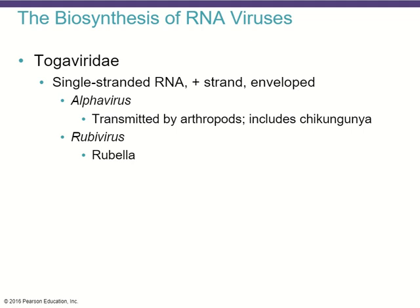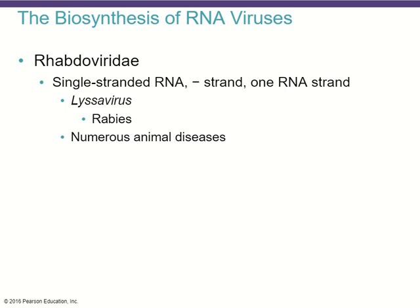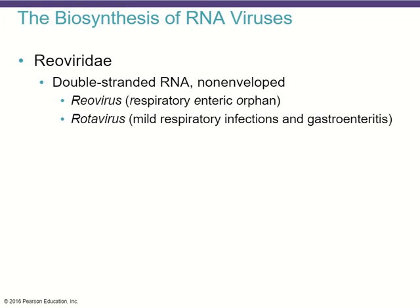Rhabdoviridae are single-stranded RNA viruses where the genome of the virion is the minus-sense or antisense strand, which once in the host needs to be transcribed into the complementary mRNA strand, and then that new strand can be used in translation to form the protein for the virus. One example is Lyssavirus, which causes rabies, and there are also numerous other examples within the animal kingdom of diseases caused by rhabdoviridae. Reovirus causes respiratory enteric orphan disease, and rotavirus causes mild respiratory infections and gastroenteritis — inflammation of the gastric system.